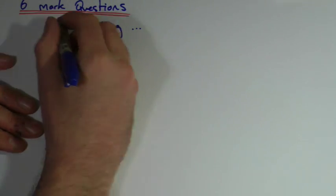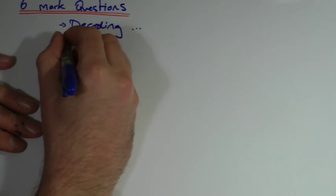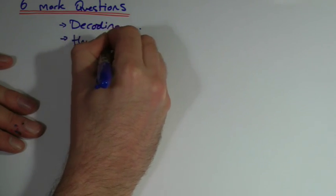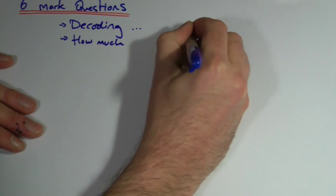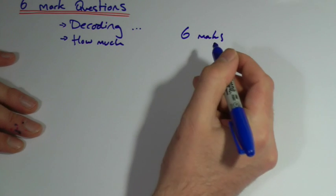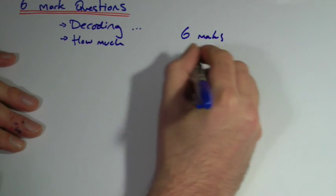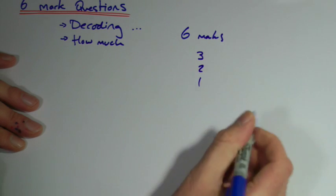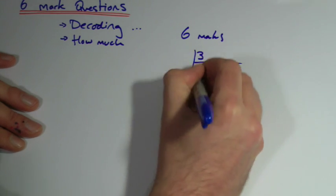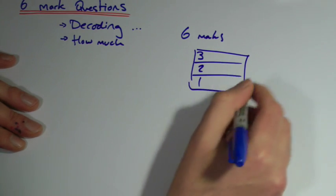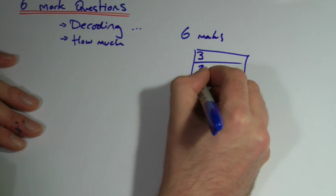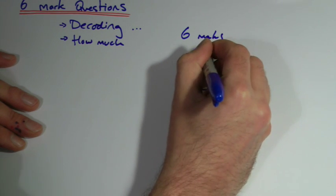The second problem is knowing how much to write - people don't write enough. There are six marks available. The way it's actually marked, hopefully you've seen one of these mark schemes, there's kind of three parts to it and for each part you can be scored. That's probably a better way of putting it - two, four, six.